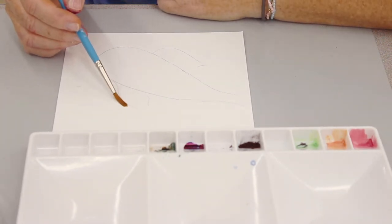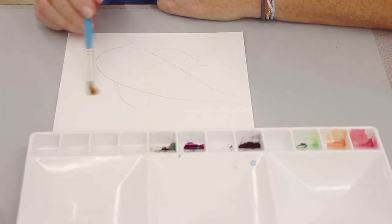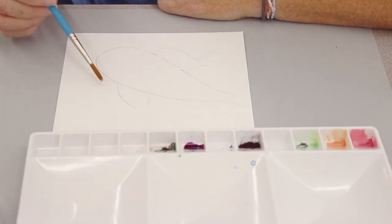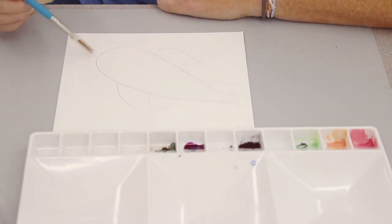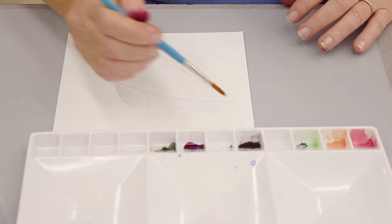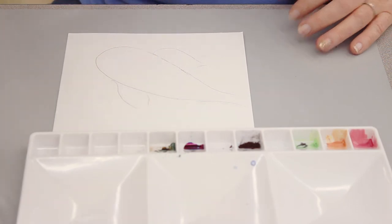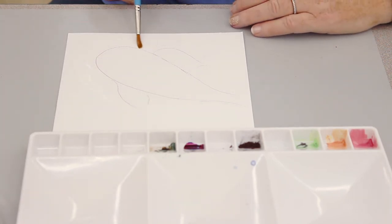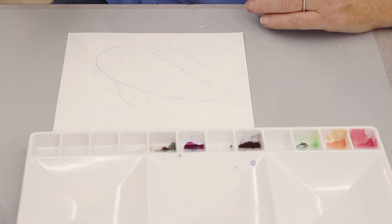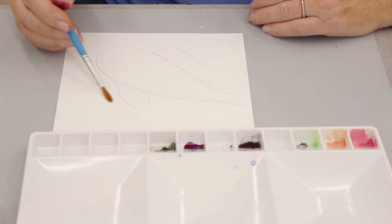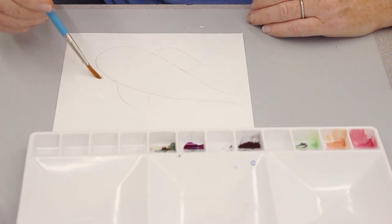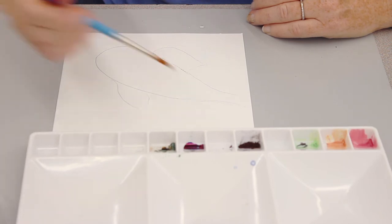I would usually just use pencil to outline this but I wanted to make sure you could see it on camera. I'm using a very generous amount of water around my koi and just getting really close to the edge almost touching it and really close. I want to make sure that the first little bit of water that I touched earlier is still puddling.